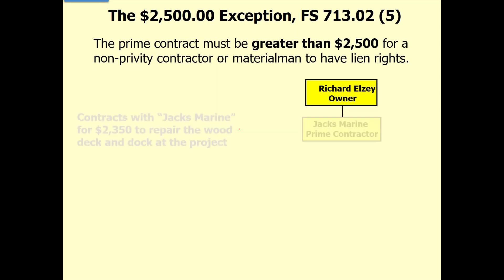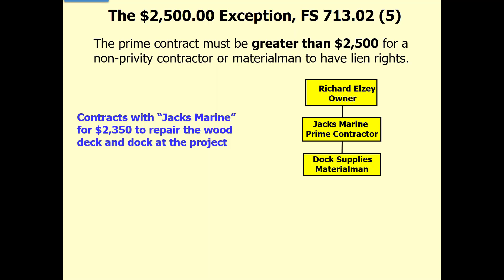Here's what the $2,500 means — it confuses people. The question: if your contract with Jack's Marine is for $2,350, is Jack saying he has no lien rights? Absolutely not — it doesn't say anything about Jack. If the prime contract between you and Jack is less than $2,500, then the non-privity contractors — the ones below Jack — have no lien rights. But Jack has lien rights for any amount of money. It's not talking about the prime contractor; it's talking about the prime contract.